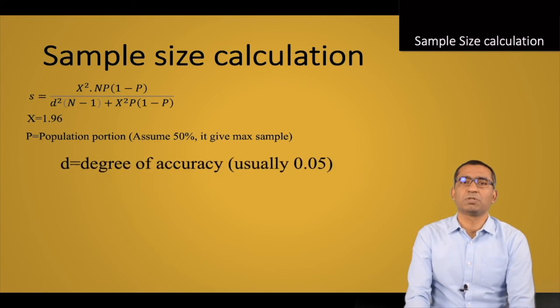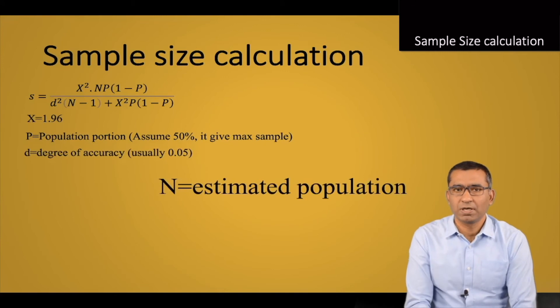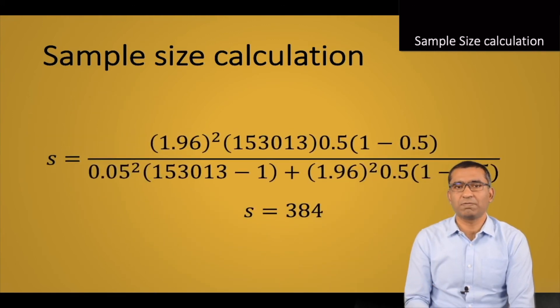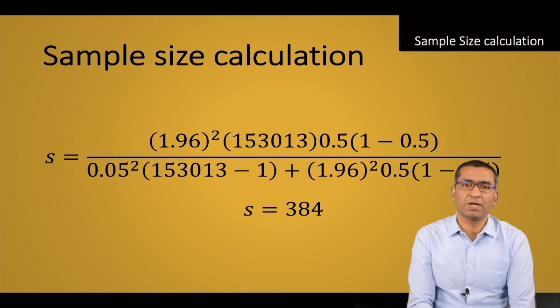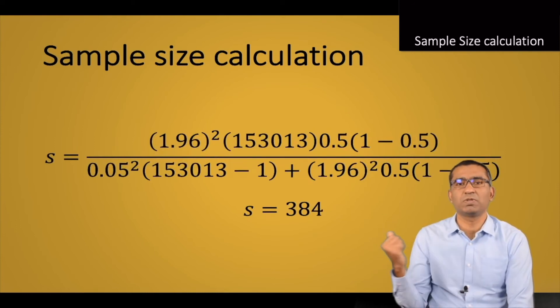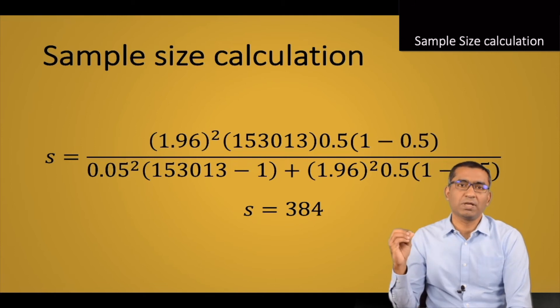Here I give you some rough calculation. For example, my population is more than 150,000. 1.96 is my t-value and X value. If you calculate all these values, you will see that you can get s equals 384, which is your sample size. So you can calculate your sample size based on this formula easily and accurately.